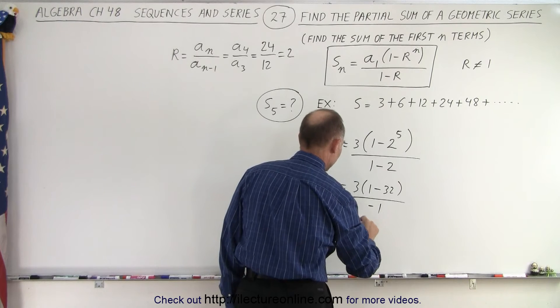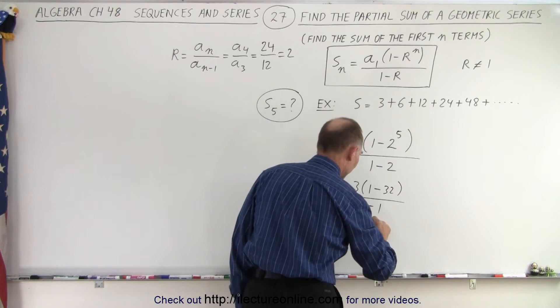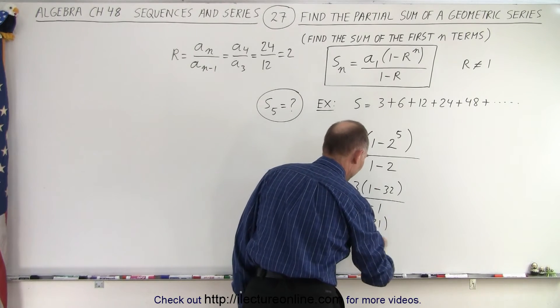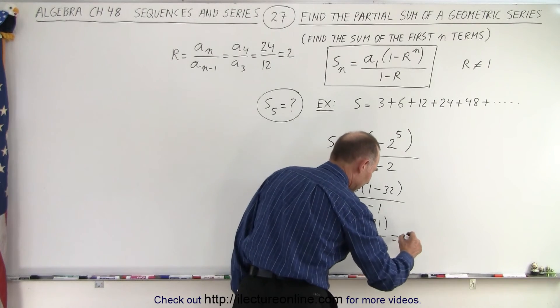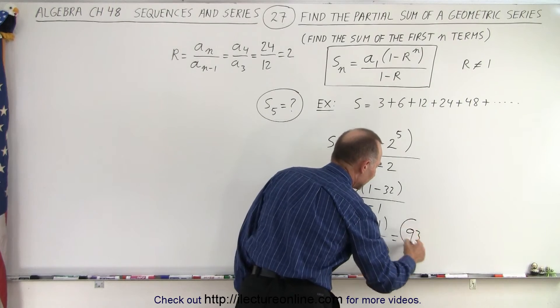So this equals 3 times -31 divided by -1, which equals 93. The minus signs cancel out, giving us positive 93.